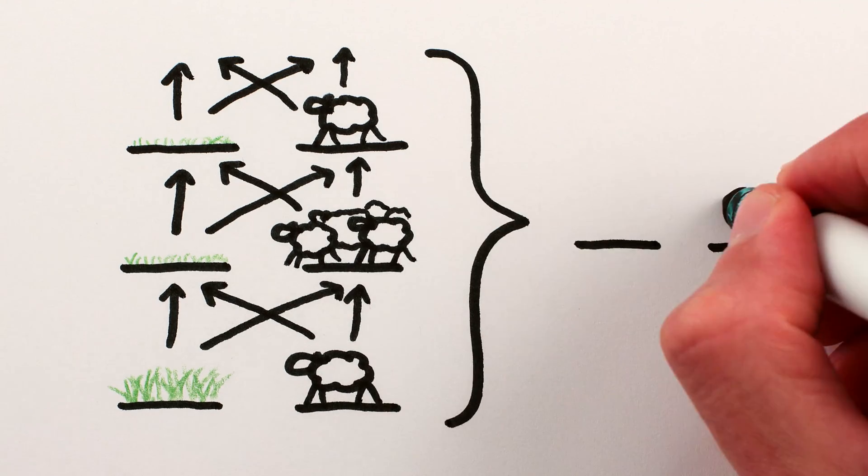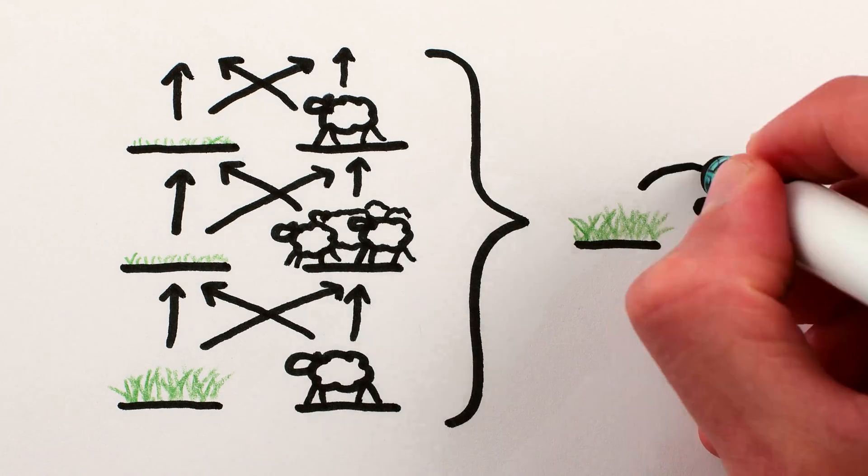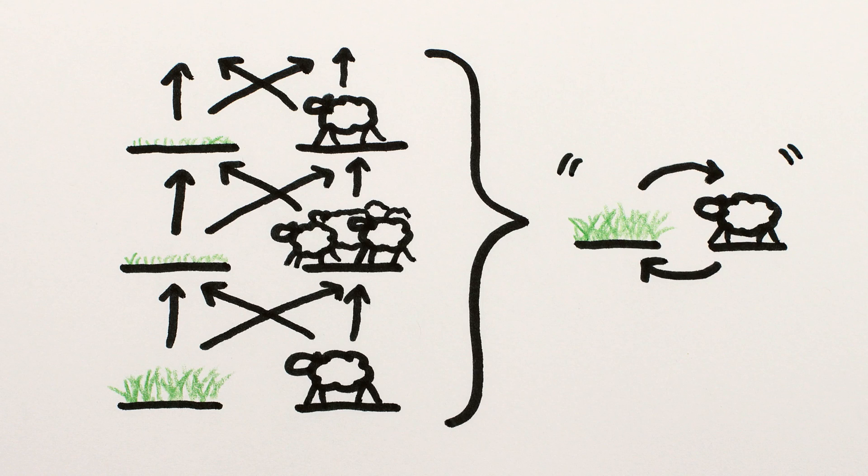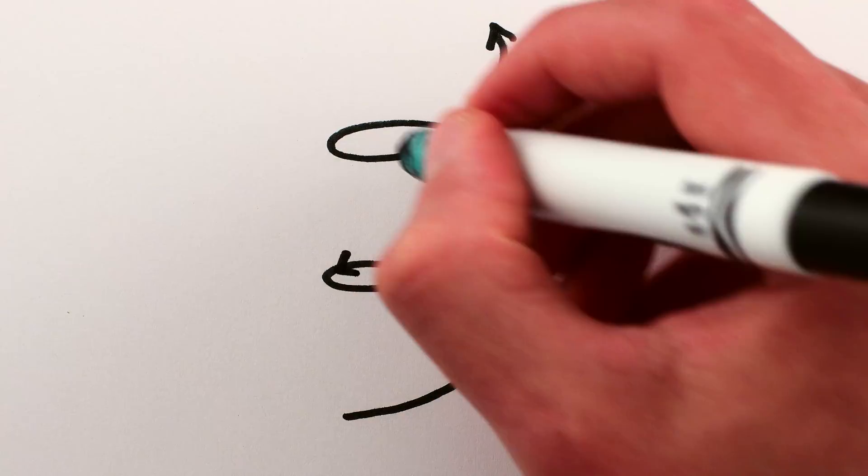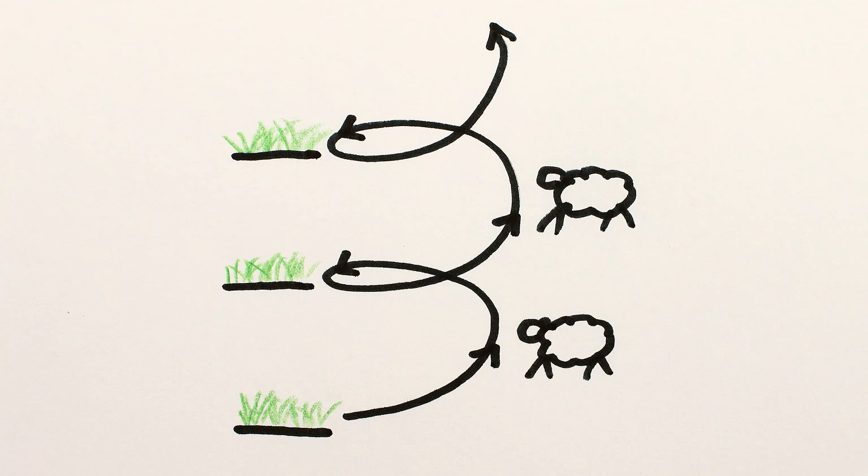So from year to year there's feedback between the amount of grass and the amount of sheep, which we kind of draw as a loop, but the causal relationship always goes from the present to the future, which we should draw as some sort of spirally helix thing.